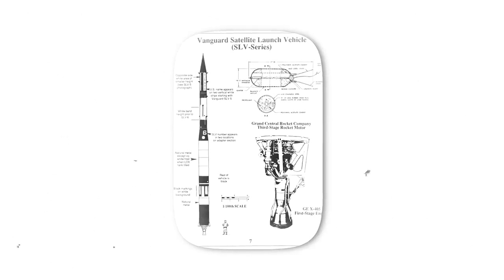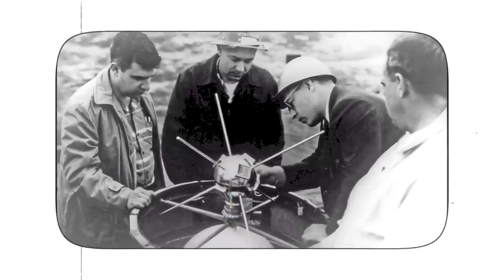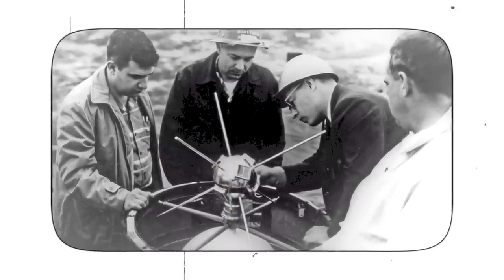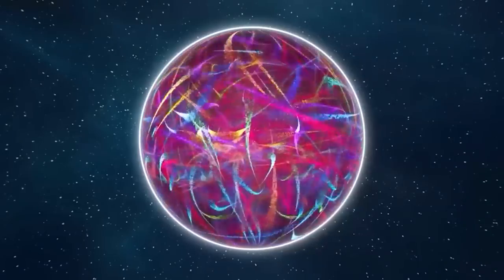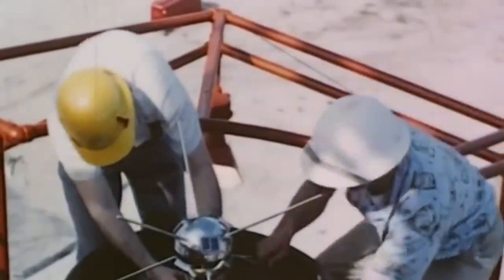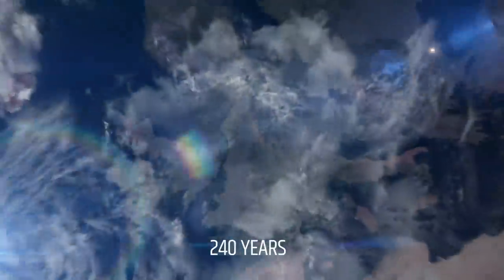Vanguard 1 was one of the earliest artificial satellites launched by the US in 1958. It was used to study the Earth's magnetic field and was also the first satellite to use solar cells to power its instruments. Vanguard 1 is now considered a zombie satellite as it no longer communicates with Earth and is predicted to remain in orbit for at least another 240 years.